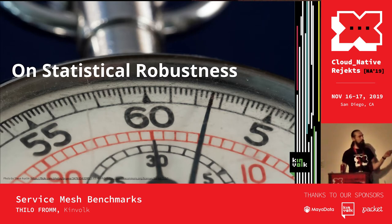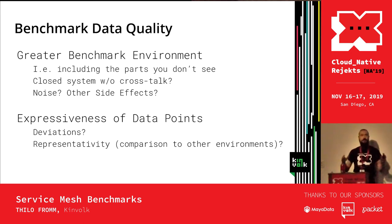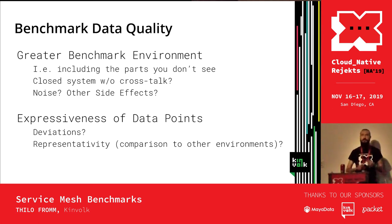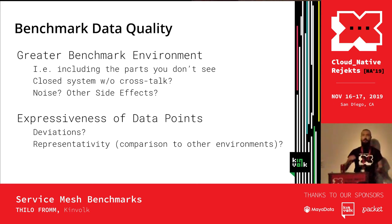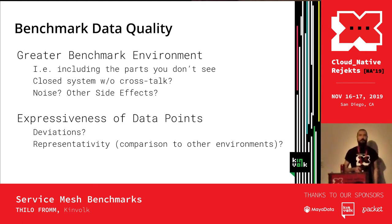Let's look at statistical robustness — something that should come naturally when you think about the quality of your data points in infrastructure-as-a-service and public cloud environments. Consider your broader benchmark environment and the things APIs and graphical interfaces hide from you. Is it a closed system without crosstalk? Do you have your servers in the basement? Is the hardware representative of the class of servers you're using, or do you have a lemon server? Is there any noise or side effects? Cloud providers give an SLA that always has a range, so when you do measurements you want to understand that range.